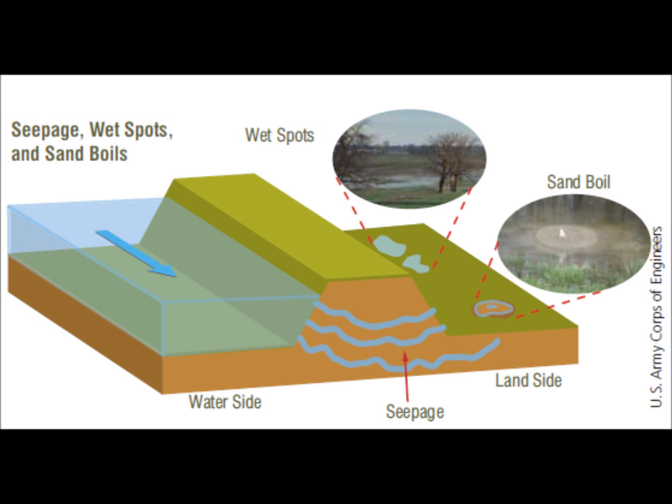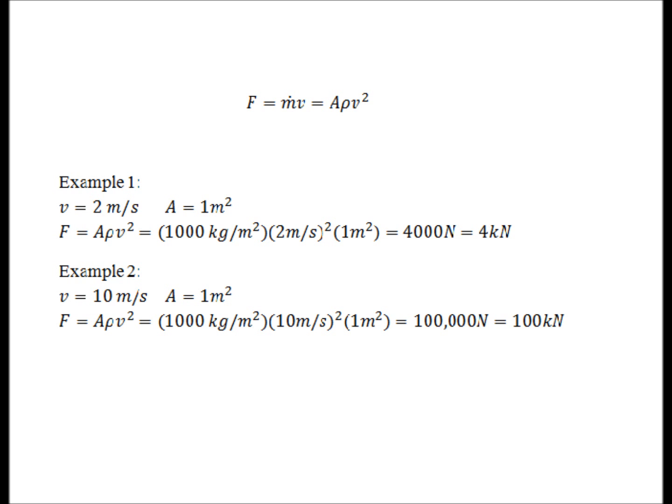To show how the flow rate of the water will affect the levee, we will take a look at a situation where the levee is in contact with high velocity water. We will use the momentum equation, which is F = ṁV, which also equals A × ρ × V². In our example, we will say that the ρ is the density of water at 1000 kg/m³, and the velocity will be stated in our two examples.